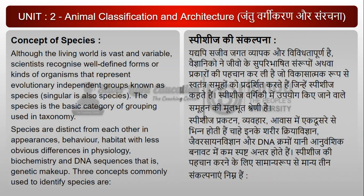Species की संकल्पना: यद्यपि जीव जगत व्यापक और विविधतापूर्ण है, वैज्ञानिकों ने जीवों के सुपरिभाषित संगरूपों अथवा प्रकारों की पहचान कर ली है, जो विकासात्मक रूप से स्वतंत्र समूहों को प्रदर्शित करते हैं जिन्हें स्पीशीज कहते हैं। स्पीशीज वर्गिकी में उपयोग किये जाने वाले समूहन की मूलभूत श्रेणी है। स्पीशीज प्रकटन, व्यवहार, आवास में एक दूसरे से भिन्न होती हैं, चाहे इनके शरीर क्रिया विज्ञान, जैवरसायन विज्ञान और डीएनए क्रमों यानि आनुवंशिक बनावट में कमस्पष्ट अंतर होते हैं। स्पीशीज की पहचान करने के लिए सामान्य रूप से माने तीन संकल्पनाएं निम्न हैं।